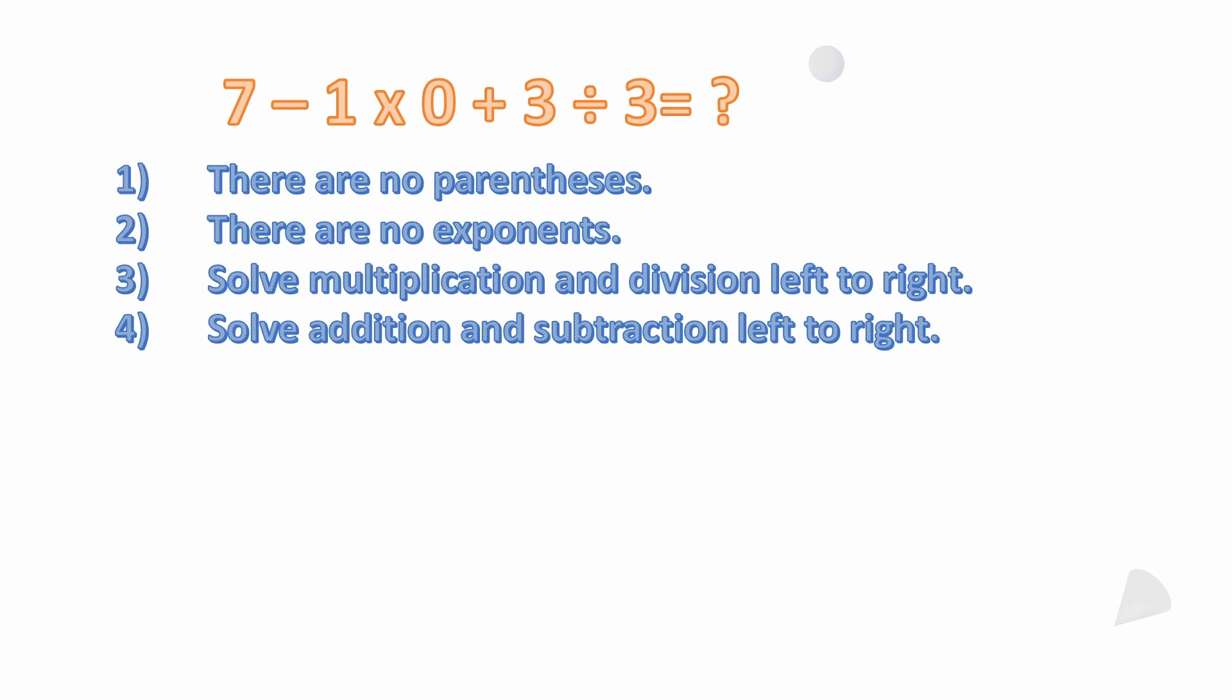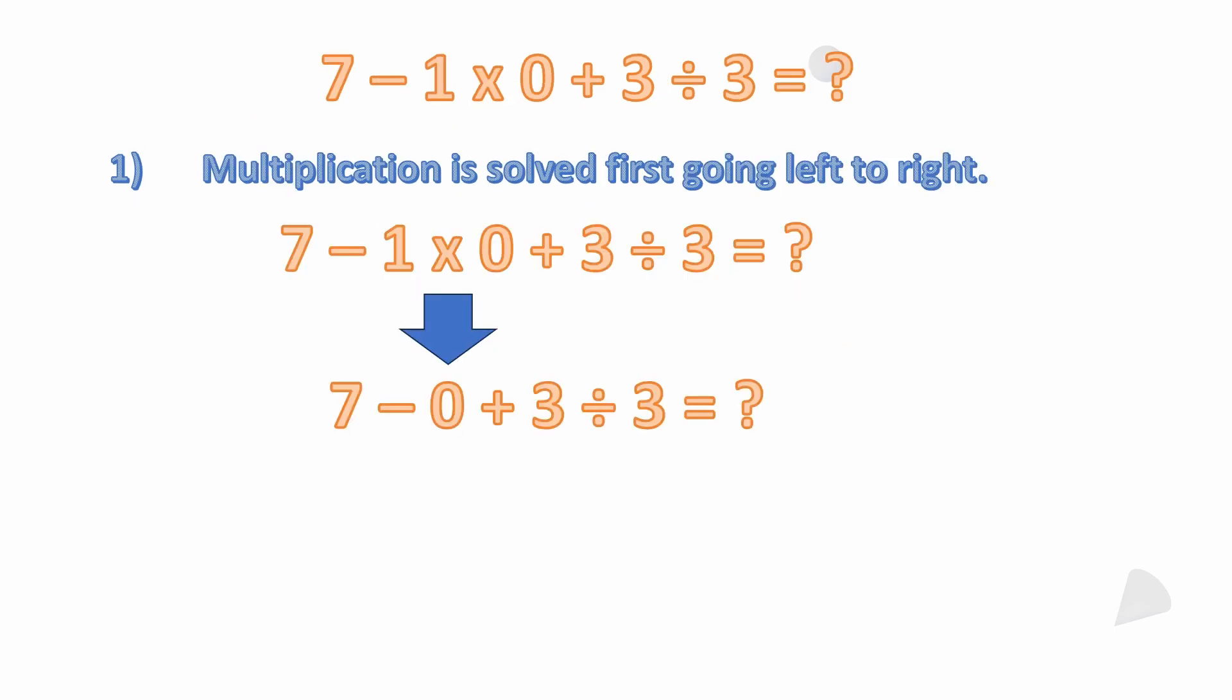Then we solve multiplication and division left to right, and then we solve addition and subtraction left to right. Here, the first thing we run into going left to right as far as going through the order is the multiplication. The multiplication is solved first as we go left to right. What is 1 × 0? One times zero is zero, it is not one. If you're struggling with the properties of zero, I do have another video on that as well, but anything times zero is zero. So we're left with 7 - 0 + 3 ÷ 3.